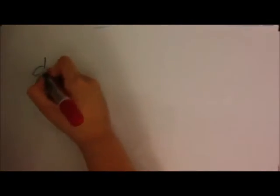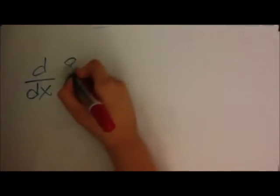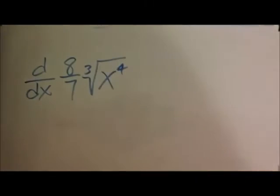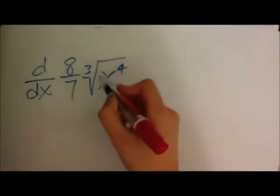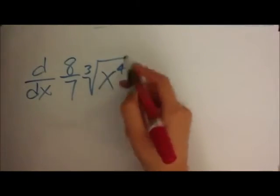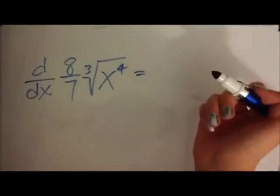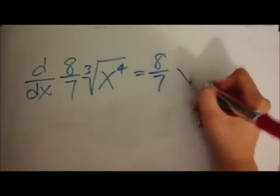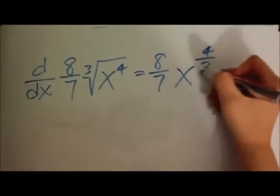For our third example, we're going to be finding the derivative of 8 over 7 times the cube root of x to the power of 4. And for a question like this, it would be great to rewrite this because it's easier to read and it's easier to solve. So this would be equal to 8 over 7 times x to the power of 4 over 3.